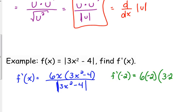6 times negative 2 times 3 times negative 2 squared minus 4 over the absolute value of 3 times negative 2 squared minus 4. Here's a hint. You don't actually need to evaluate that expression right here. You just need to decide, is this going to end up giving me something that's positive or is it going to give me something that is negative?